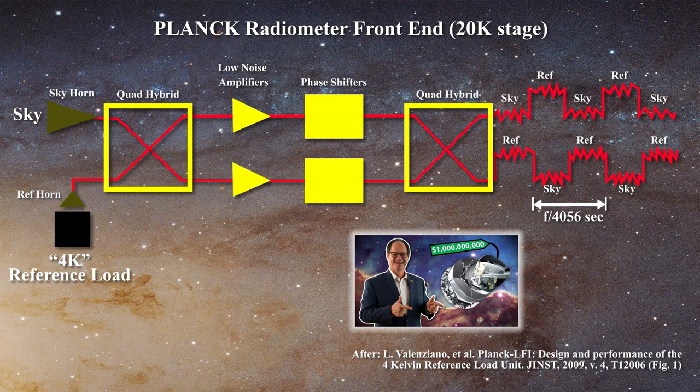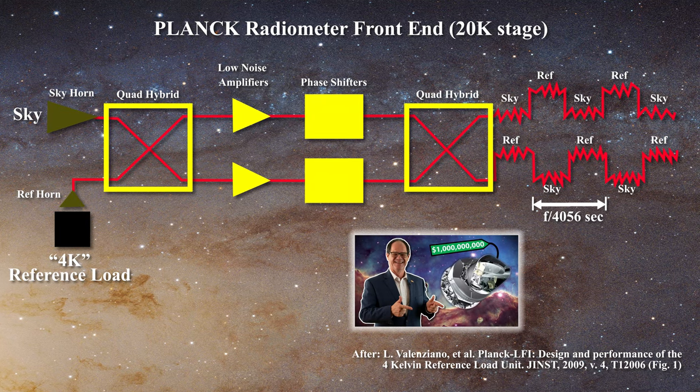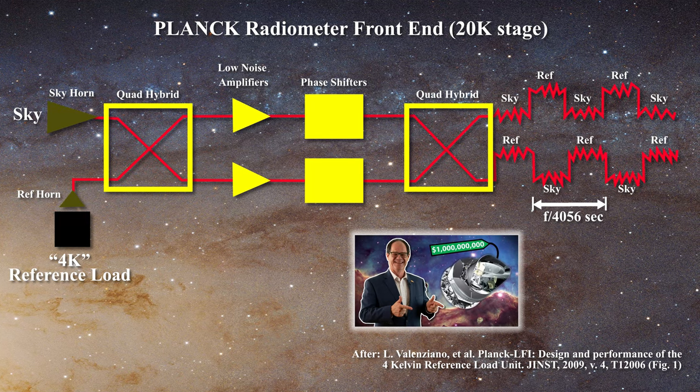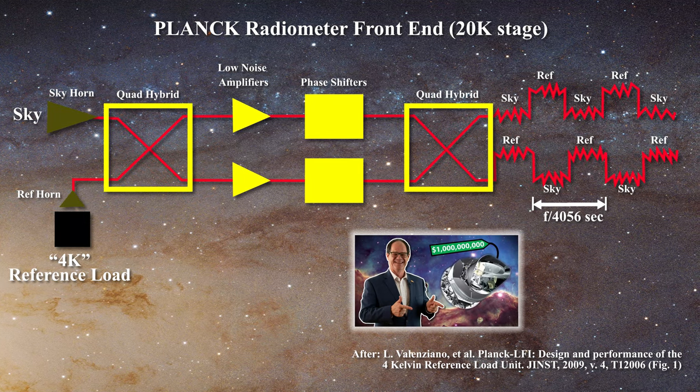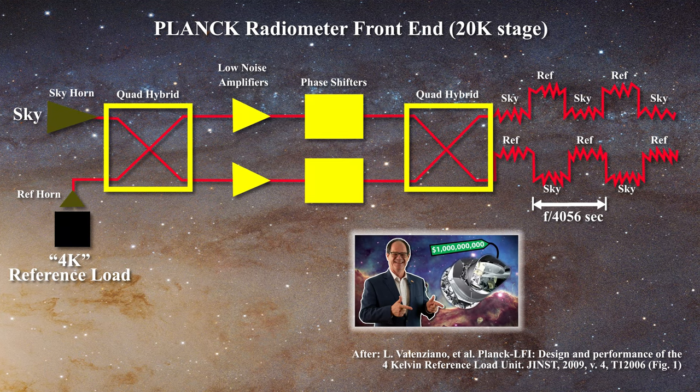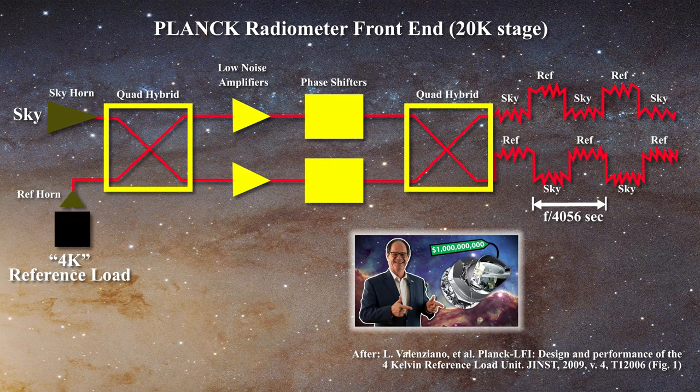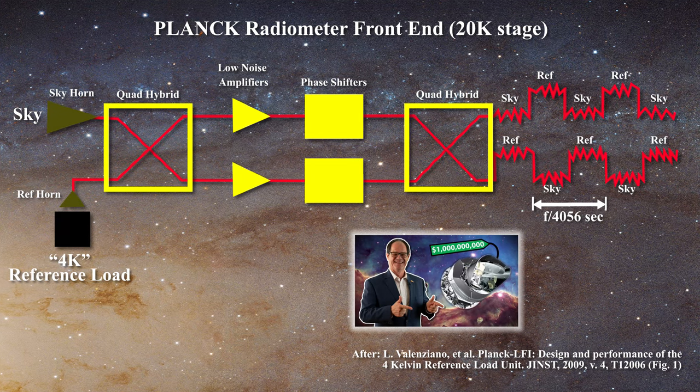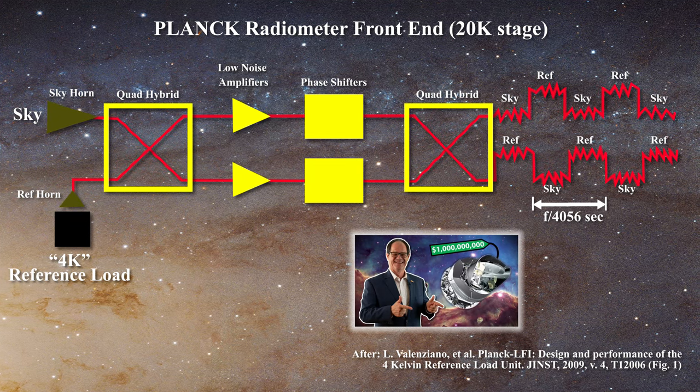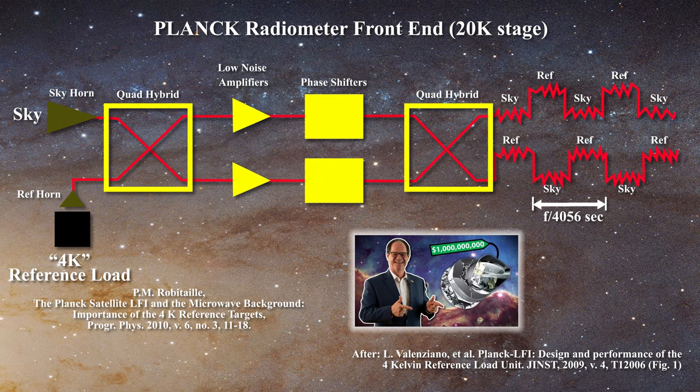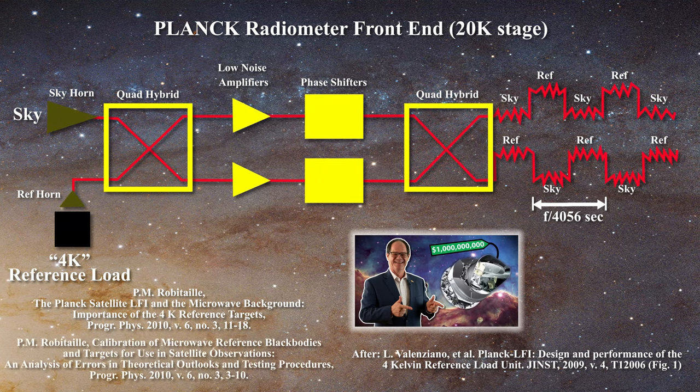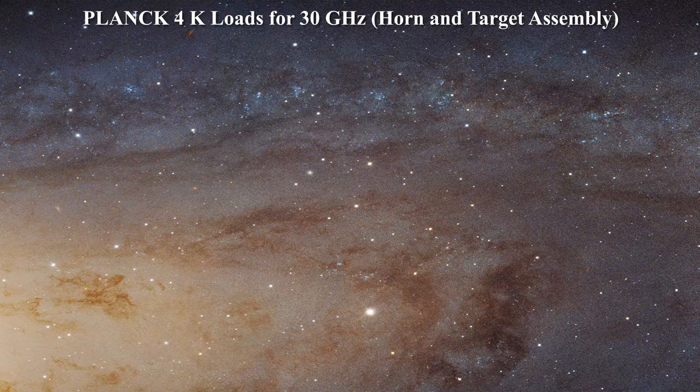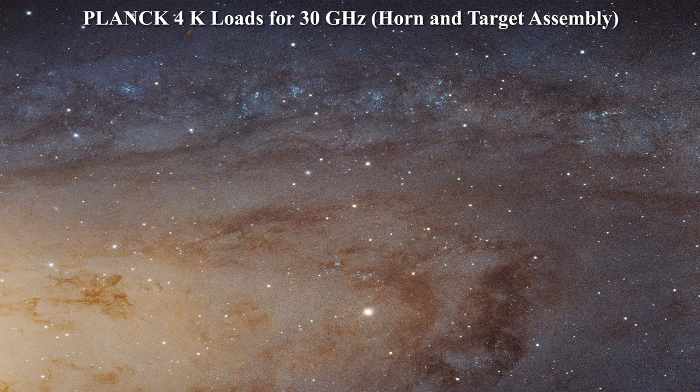Each radiometer is equipped with its own 4K load. Now it is critical for the proper function of the LFI that the reference loads are actually acting as blackbodies near 4K, but it appears that this has not been achieved. The details of the reference loads on Planck can be found in this paper and I have previously discussed the problem with the 4K loads in detail here. I have also prepared a paper relative to testing blackbodies with return loss measurements, which you can review if interested. The reference loads are made up of three components and each should be carefully analyzed.